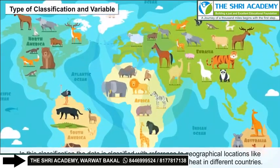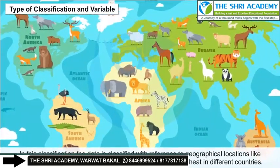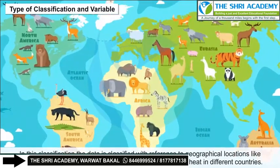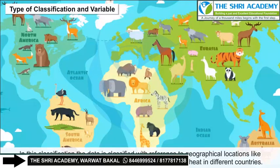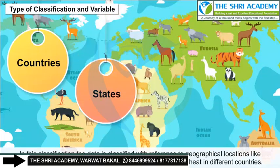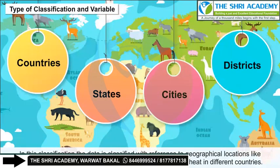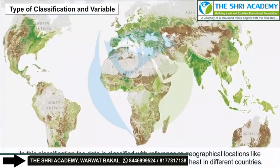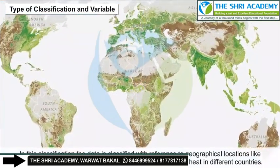Geographical or spatial classification: in this classification, the data is classified with reference to geographical locations, like countries, states, cities, districts, etc. For example, yields of wheat in different countries.